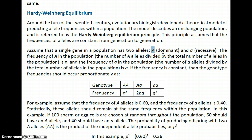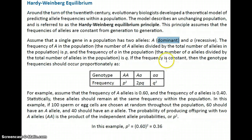There are dominant copies and recessive copies. Typically we use a capital letter to represent the dominant allele and a lowercase letter to represent the recessive. Keep in mind that dominant does not mean there are more of them — dominant is a reference to phenotypic expression. For most dominant alleles, only one copy is needed for that characteristic to express over the recessive allele.